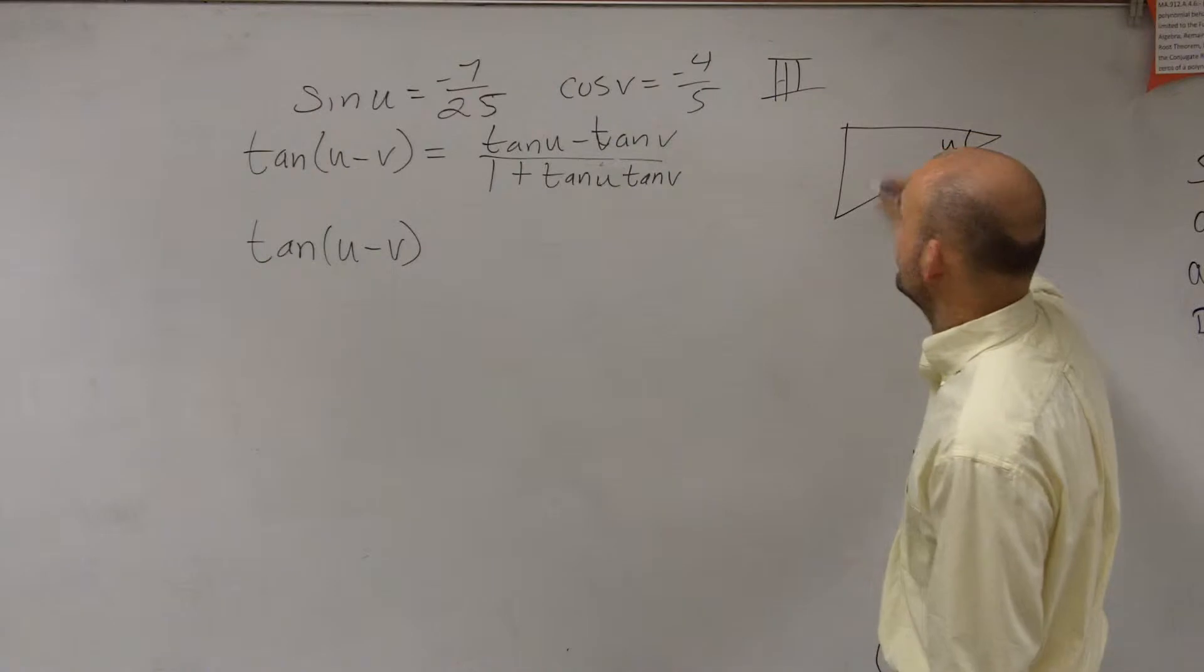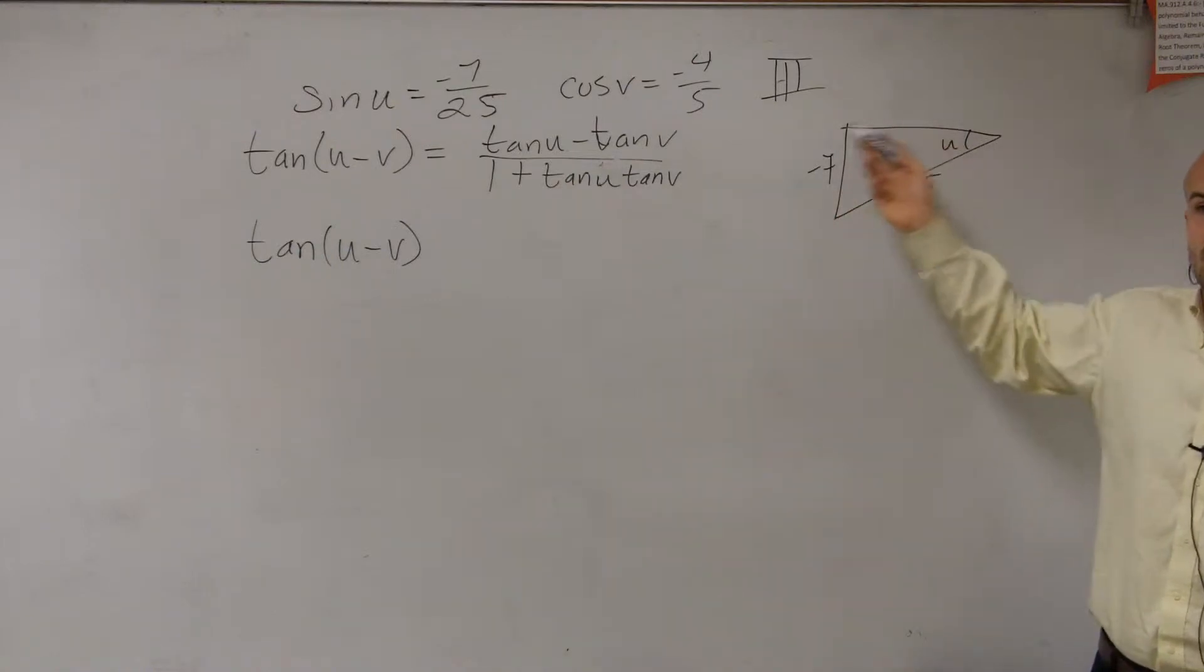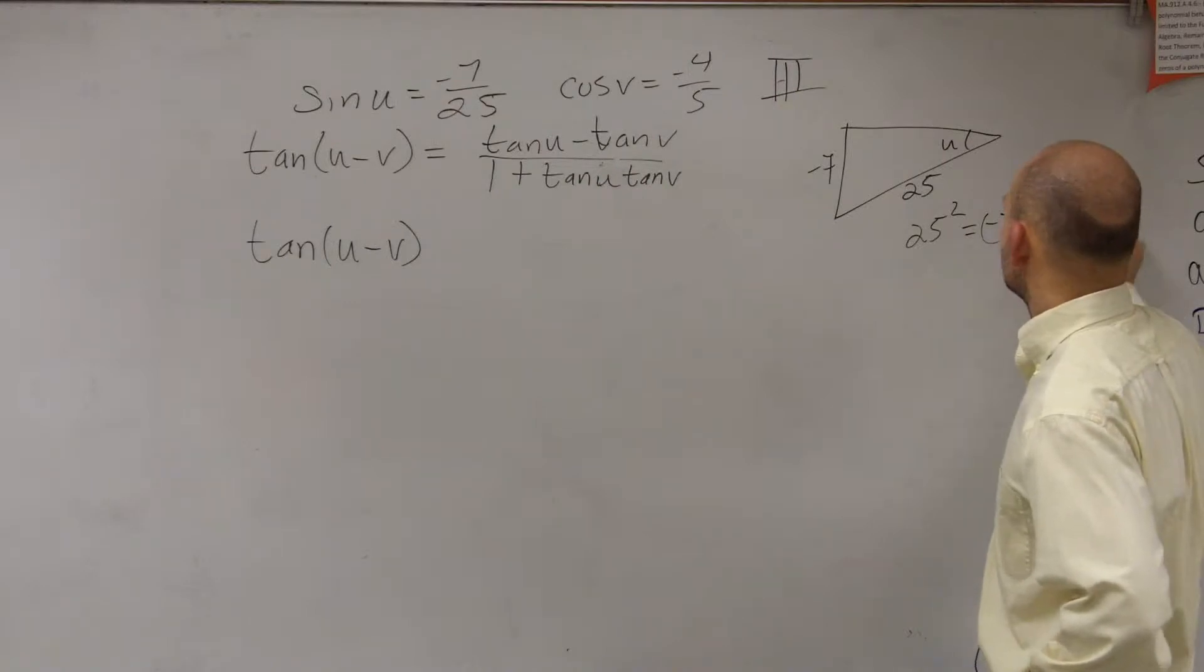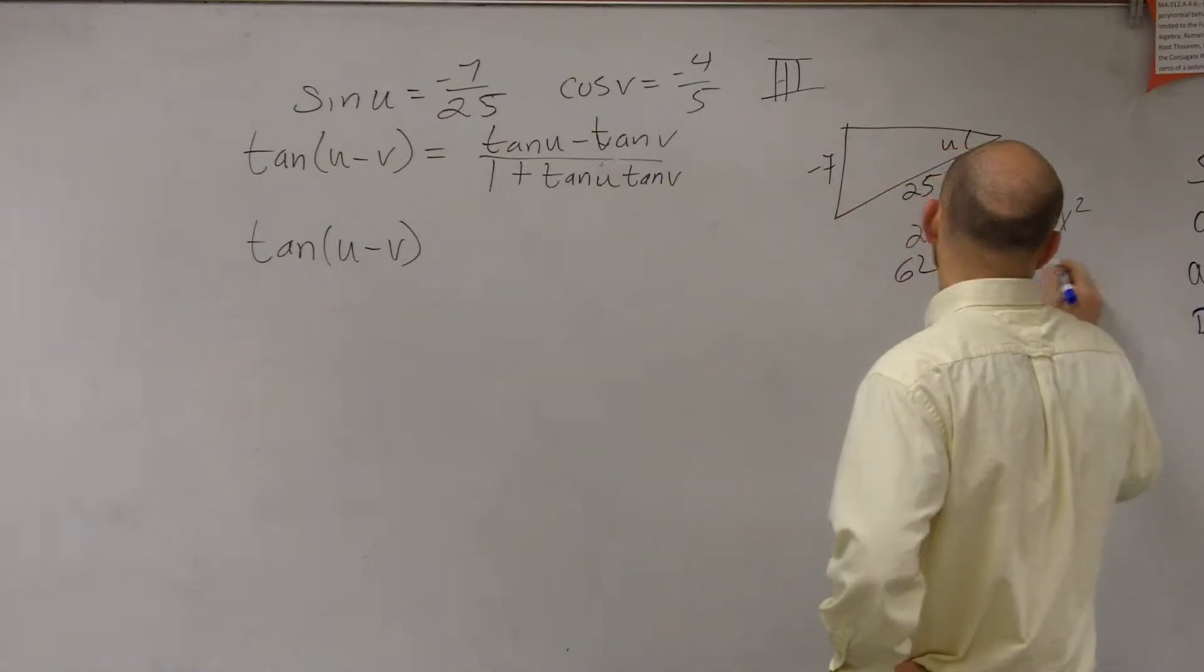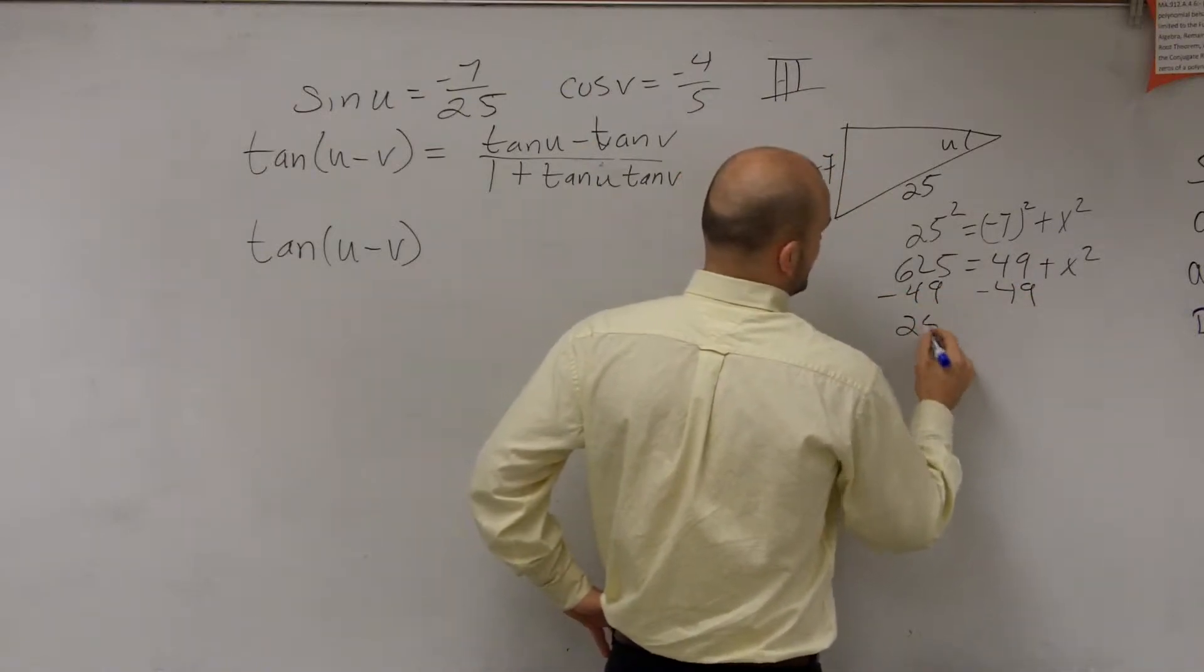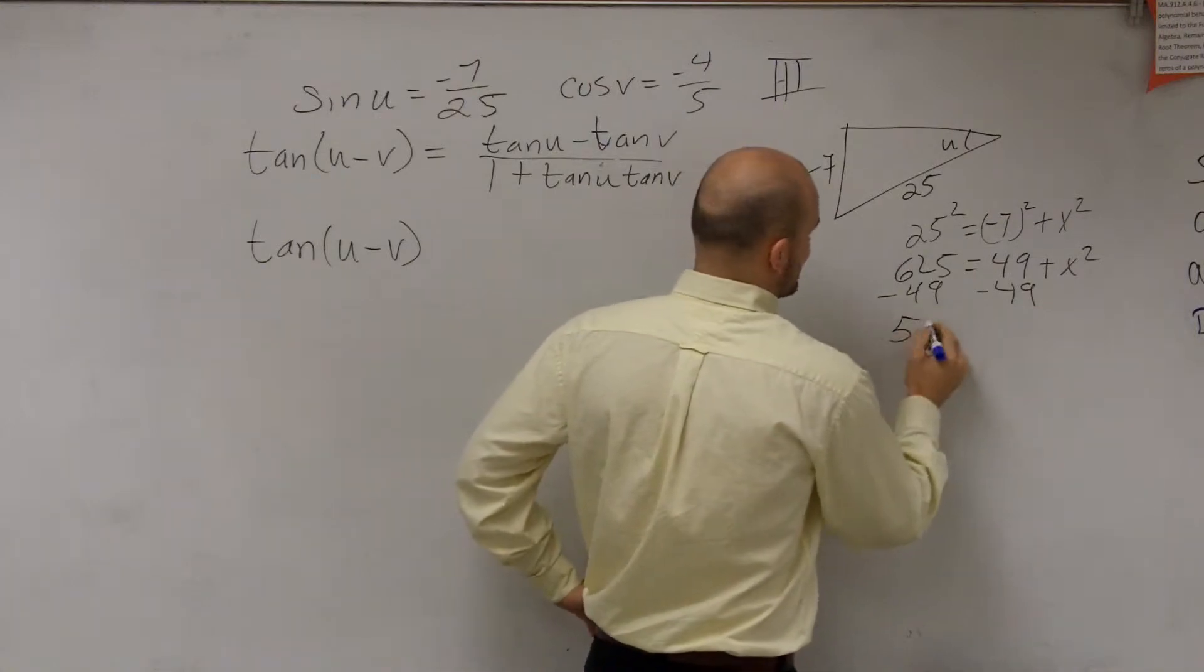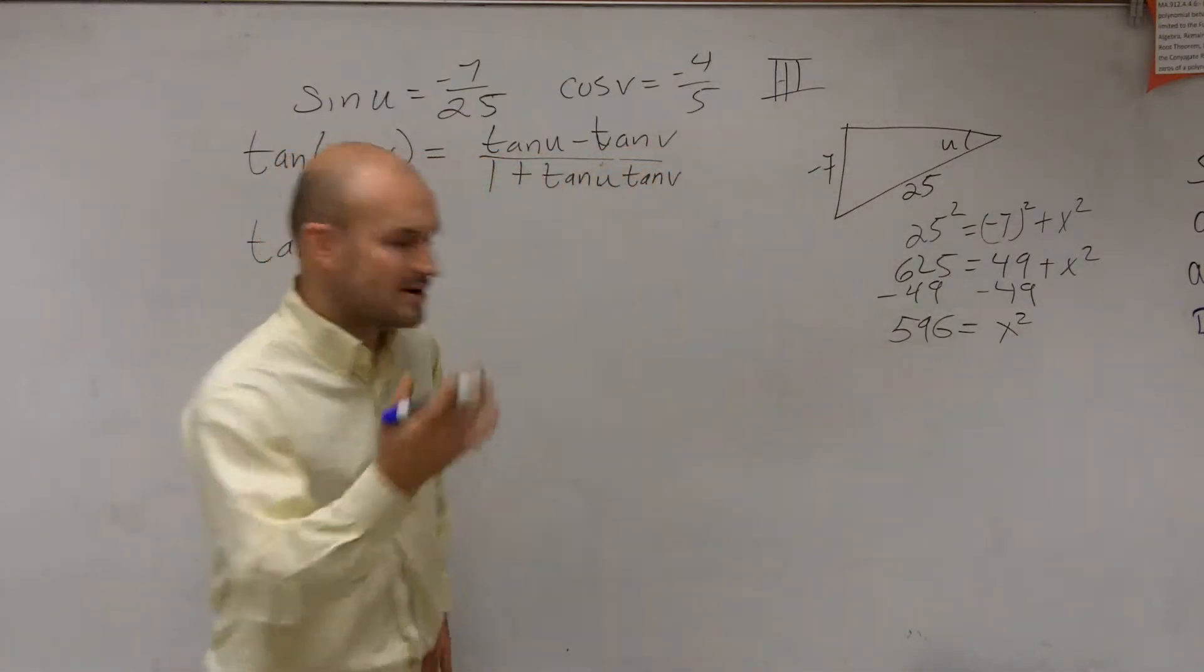If this is angle u, then this is negative 7, because that's your opposite side over your hypotenuse. So therefore, I need to figure out what my adjacent side is. So I could say 25 squared is equal to negative 7 squared plus x squared. Well, 25 squared is 625, equals 49 plus x squared. Then subtract 49. And that's going to be 625 minus 49 is going to be 576. And that's going to equal x squared. And the square root of 576 is 24.